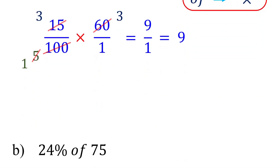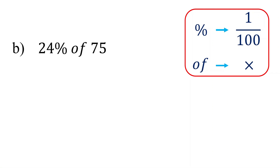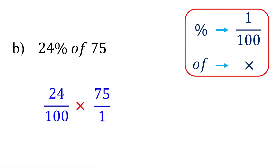Let's work on another example. Please feel free to pause the video and give it a try. Remember, percent means per 100, and the word 'of' implies multiplication. 24% means 24 over 100. Of implies multiplication. 75 is the same as 75 over 1.